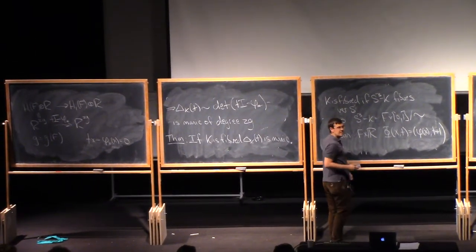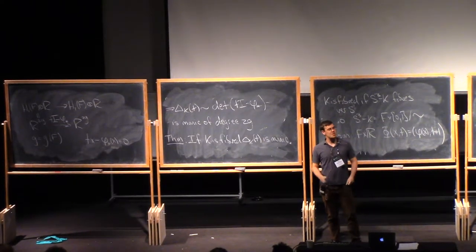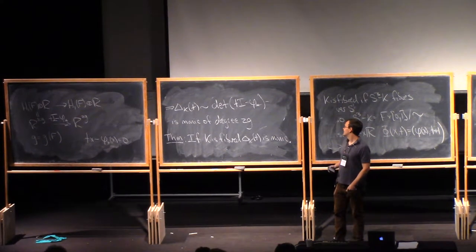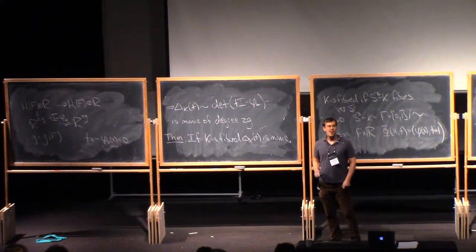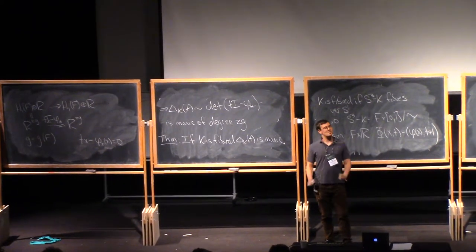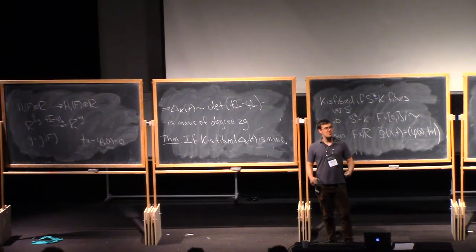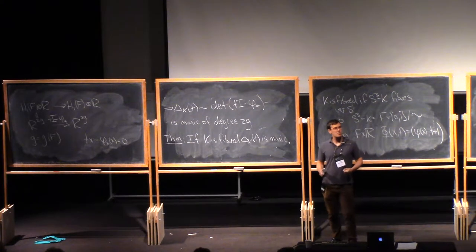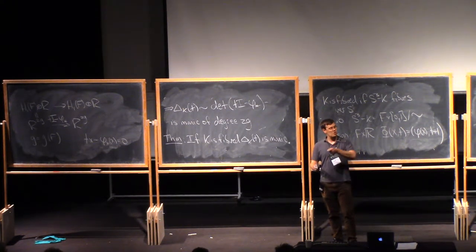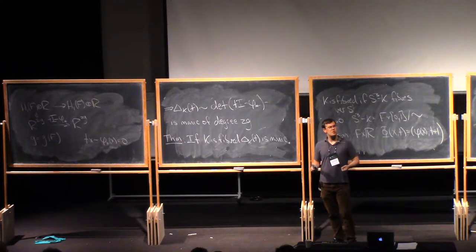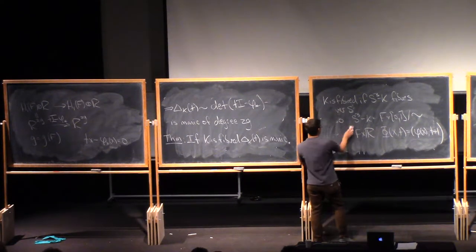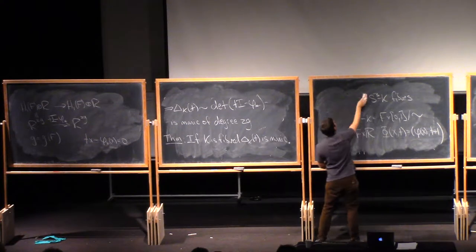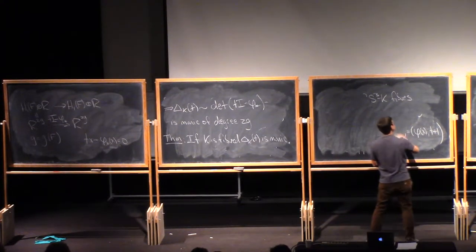Q: Is this an if and only if? No, it's not if and only if in general. However, it is a theorem that if you can draw your knot as an alternating knot — where as you walk along the knot the crossings go over, under, over, under — then the knot is fibered if and only if the Alexander polynomial is monic. So you could also prove that theorem and then observe that the trefoil is alternating.